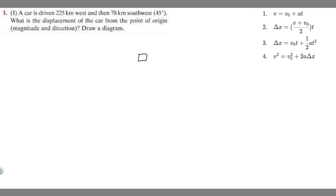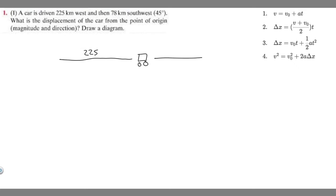Let's say we have our car right here — it's just a box with wheels. It's driven 225 kilometers west. So imagine north, east, south, west — it's going to go west 225 kilometers. This is going to be negative because we're going in the left direction. Right is positive, up is positive, down is negative.